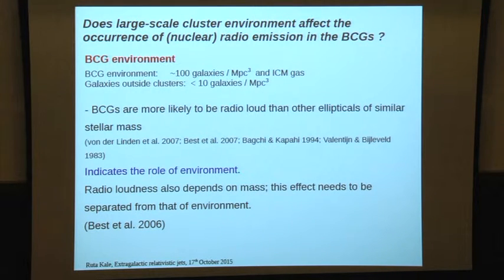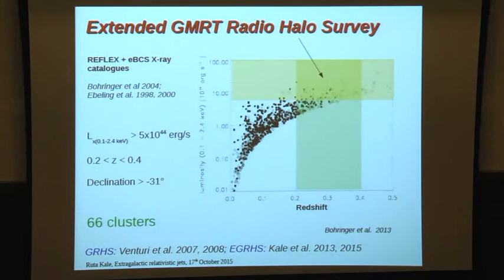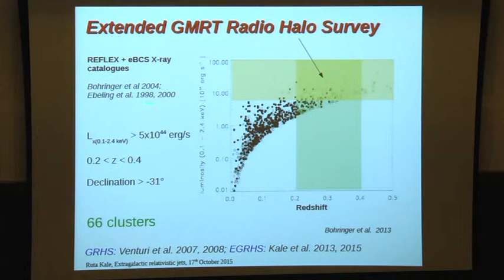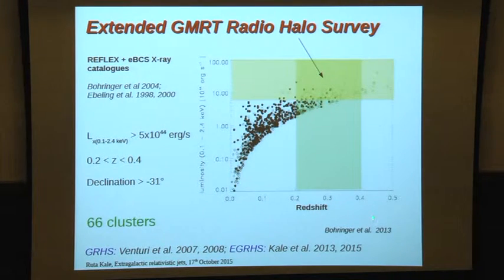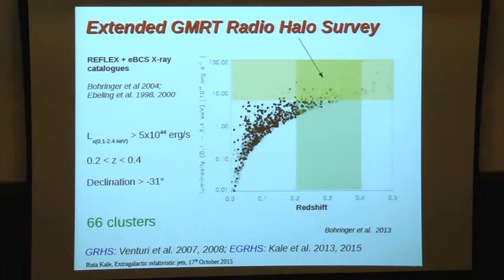There is also a scaling between radio power and mass, and we need to decouple this effect from that of the environment. We worked with the Extended GMRT Radio Halo Survey — a sample of 66 clusters extracted from the all-sky X-ray cluster surveys REFLEX and eBCS. These are the most luminous clusters, in the redshift range of 0.2 to 0.4, and are the most X-ray luminous clusters in this redshift range.